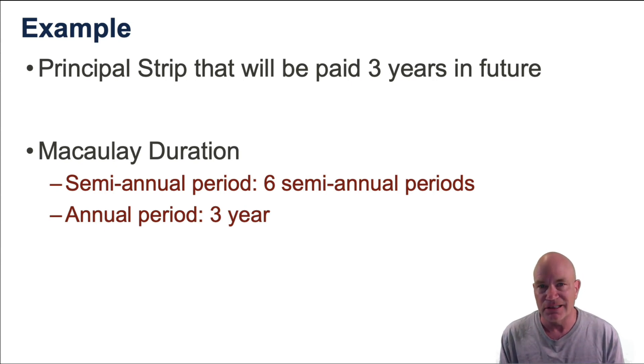Its Macaulay duration, in this case, is six semi-annual periods in the future or three years in the future. So there is what Macaulay duration looks like in the zero-coupon bond case.